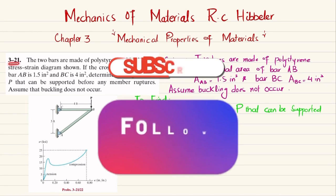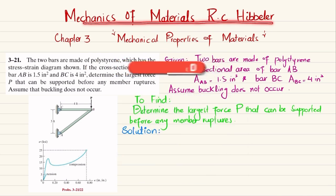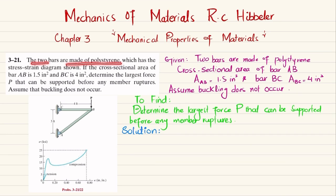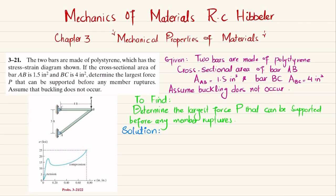Welcome back, problem 3-21. This problem is taken from chapter 3, Mechanical Properties of Materials, from the book Mechanics of Materials by R.C. Hibbeler. The statement is: the two bars are made of polystyrene which has the stress-strain diagram shown. If the cross-sectional area of bar AB is 1.5 square inches and BC is 4 square inches, determine the largest force P that can be supported before any member ruptures. Assume buckling does not occur. These are two bars — bar BC and bar AB — with pin supports at A and C, and load P applied at B. The stress-strain diagram is given separately for tension and compression.